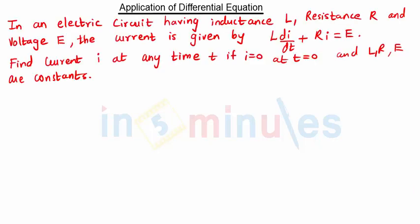In an electric circuit having inductance L, resistance R, and voltage E, the current is given by this equation. Find the current i at any time t if i=0 at t=0.